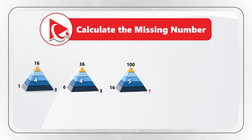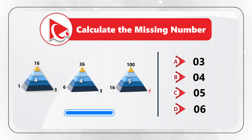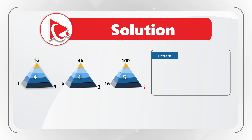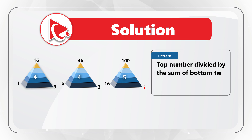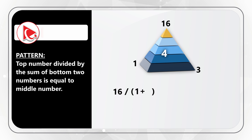Here's one of my favorite questions where you need to calculate the missing number. You're presented with three pyramids. Pyramids have numbers on each side as well as in the middle. The first pyramid has numbers 1, 16, and 3, with 4 in the middle. The second pyramid has numbers 6, 36, 3, and 4 in the middle. The third pyramid has numbers 16, 100, a missing number, and 5 in the middle. You need to select the missing number from four choices: A) 3, B) 4, C) 5, D) 6.